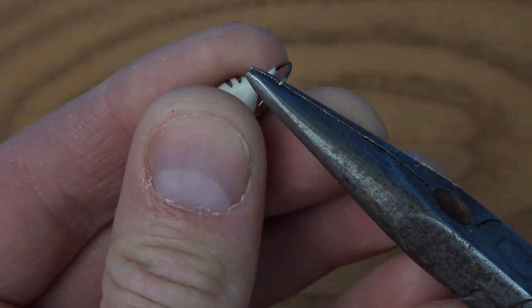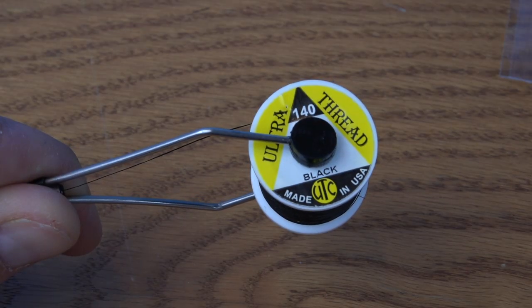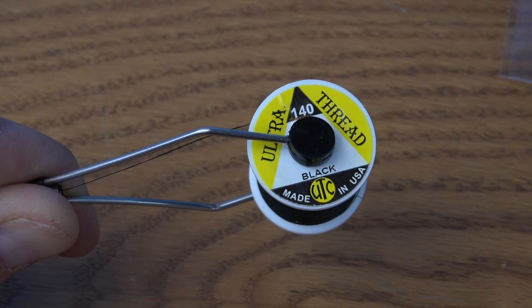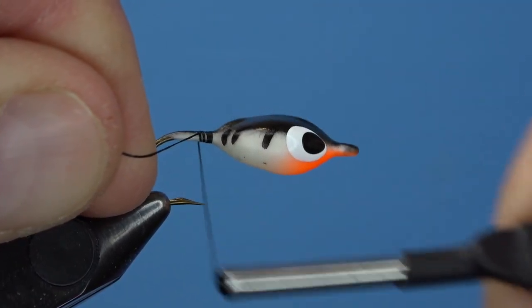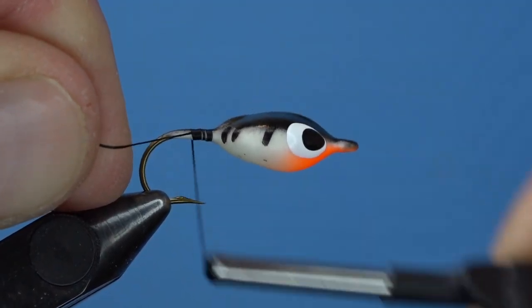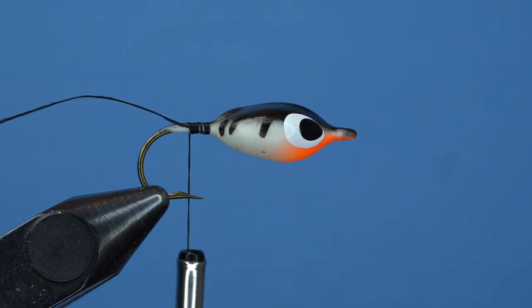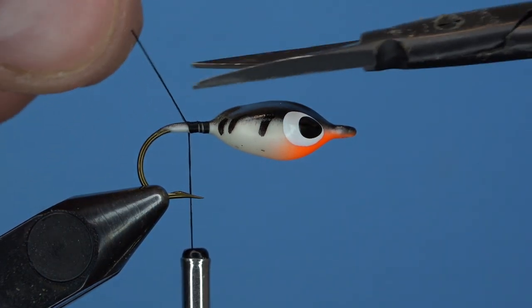Starting off with a foam floater in glow perch color. A link to this specific foam floater will be in the description. Always pinch the barb before getting a base of 140 Ultra Thread started on the backside of the hook. We're going to bring our thread all the way back to the bend of the hook before we put in a little half hitch to keep it in place.